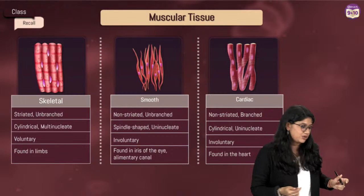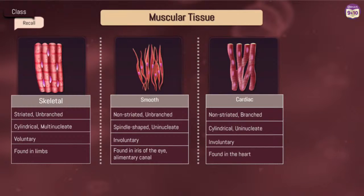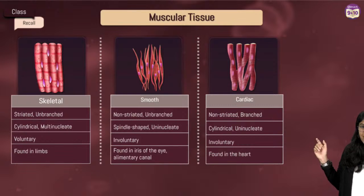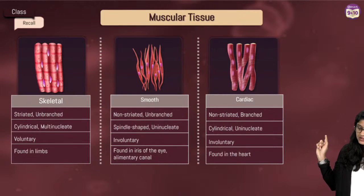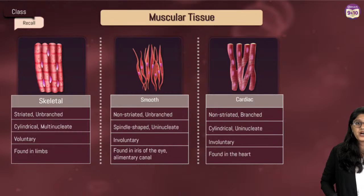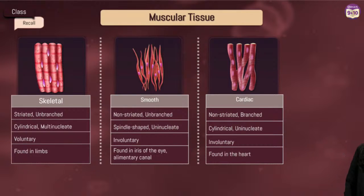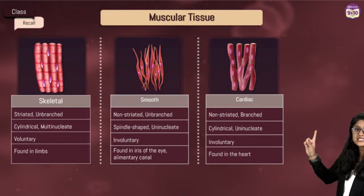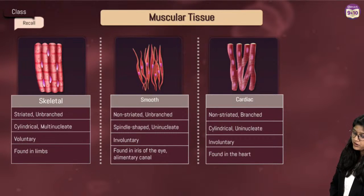Now for muscular tissue — we have three types. We have skeletal muscles, smooth muscles, and cardiac muscles. Cardiac muscles work 24/7. They are cylindrical, non-striated, branched, and uninucleated — meaning they have a single nucleus. They are involuntary — you and I cannot control them.